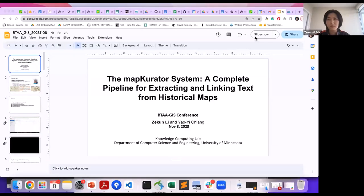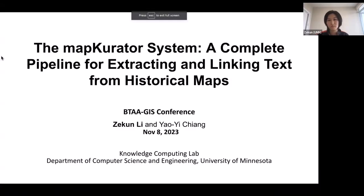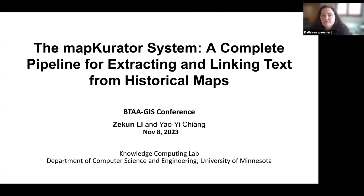Our first speaker is Zikun Lee, a computer science PhD student at the University of Minnesota. Her research interests lie in the automatic understanding of historical maps using computer vision and natural language processing techniques. She's engaged in work involving the detection of text on historical map labels, the connection of separated text labels, the linking of recognized place names to existing knowledge bases, entity linking, and the inference of label types, which is entity typing.